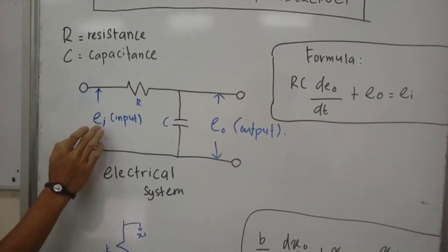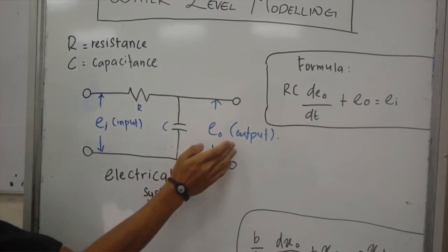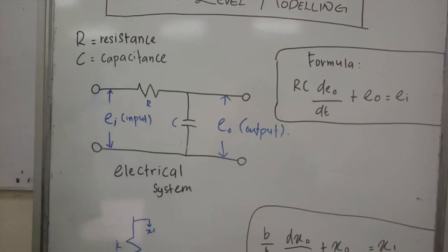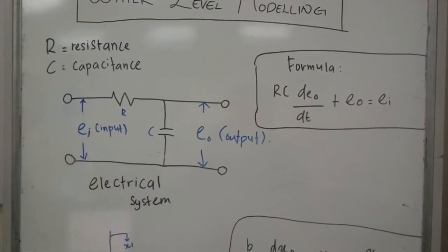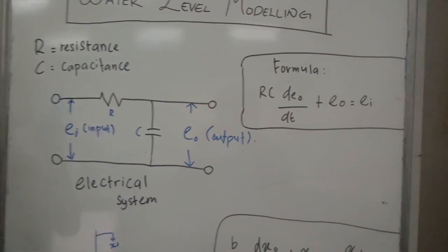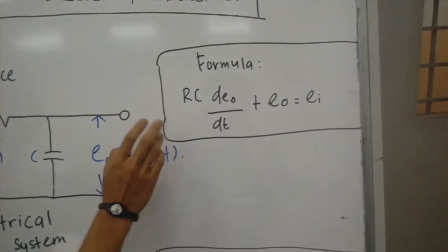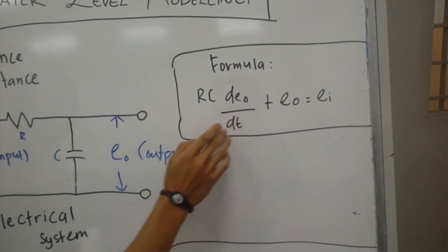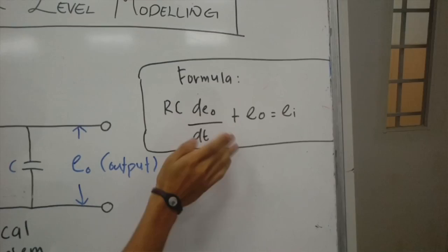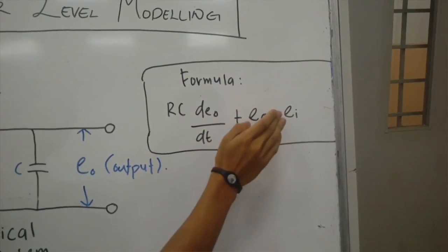E input and Eo is output. So in the circuit, we have the formula. The formula has RC dEo/dt plus E output equal E input.